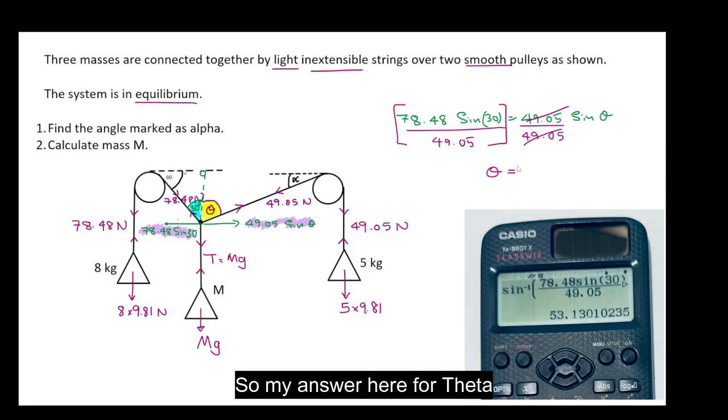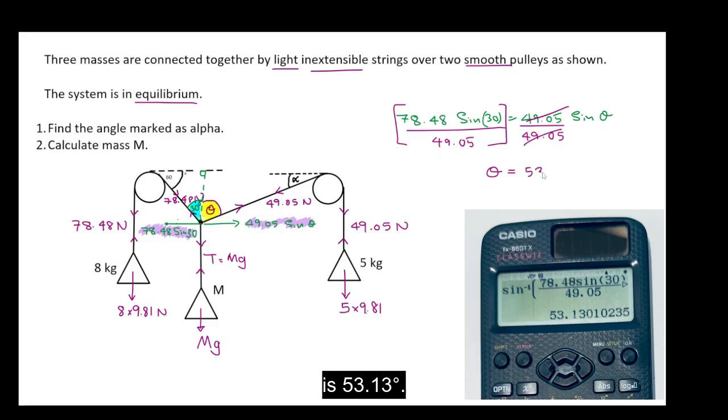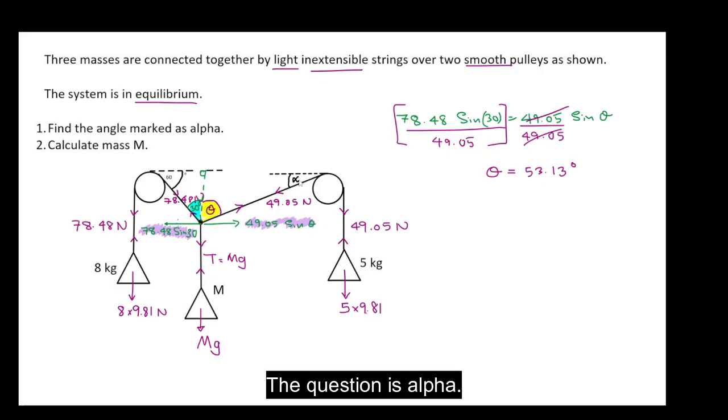So my answer here for theta is 53.13 degrees. Now the question is not theta. The question is alpha.